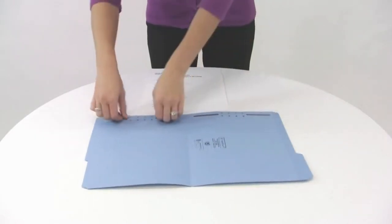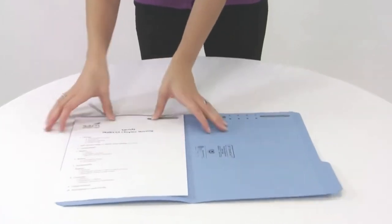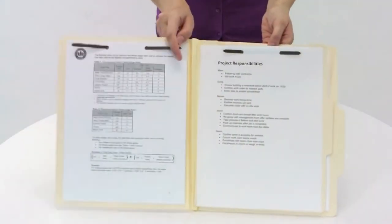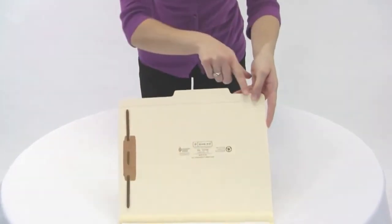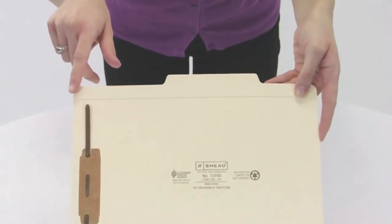Smead has a fastener folder to fit every organizing challenge, whether it's extra dividers, built-in storage pockets, reinforced tabs, or antimicrobial product protection.